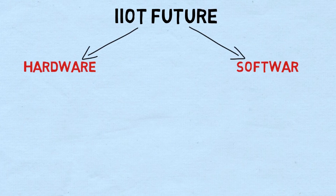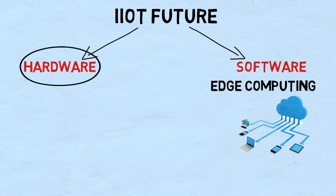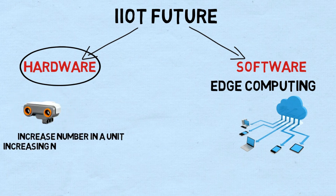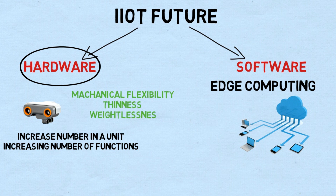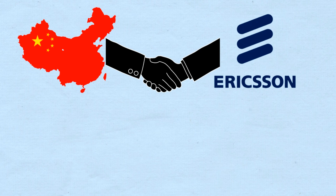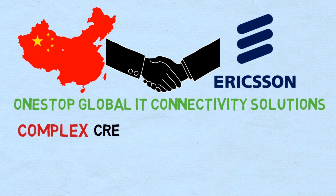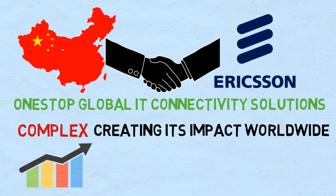IoT is making big strides due to new advances on both hardware and software fronts. On the software side, edge computing is providing cloud-based machine learning models which will make hardware faster and more reliable. On the hardware side, major companies will shrink the size of sensors to increase their number per unit and increase the number of functions they can perform, with properties like mechanical flexibility, thinness, and weightlessness. IoT would connect millions of devices worldwide, enabling one unified organizational culture for all nations. China Telecom and Ericsson signed an MOU in 2016 to build a global IoT, providing one-stop global IT connectivity solutions. Even if IoT is a complex system, it is creating its impact worldwide, and we can see it becoming smarter and easier.